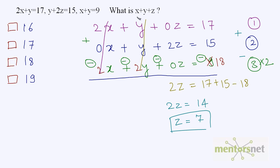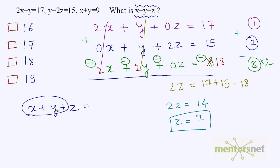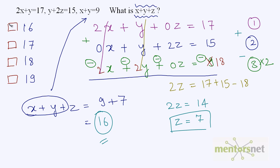What is asked is x plus y plus z. We know the value of x plus y, which is 9 from equation 3. So x plus y plus z is equal to 9 plus 7, which is 16. There is our answer: 16.